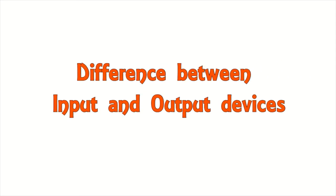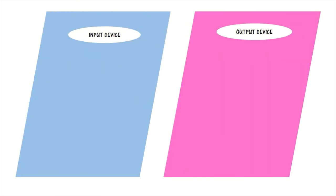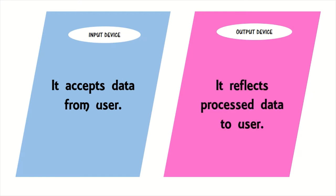Difference between input and output devices. Input device: It accepts data from user. Output device: It reflects processed data to user.